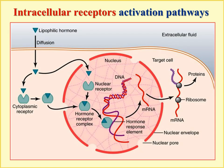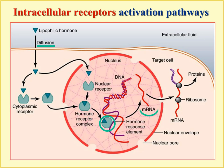Looking at the intracellular receptor activation pathway again: diffusion first, then binding to cytosolic or nuclear receptors; the hormone-receptor complex activates DNA transcription; mRNA is formed and moved to ribosomes where new proteins are produced. The process of protein formation from zero takes much longer than any other receptor type — at least hours are required to achieve a sufficient amount of the resulting proteins for a certain effect.